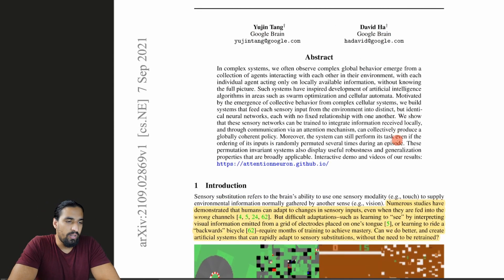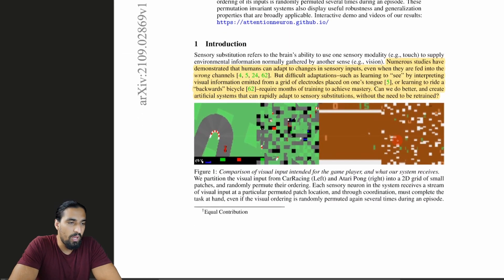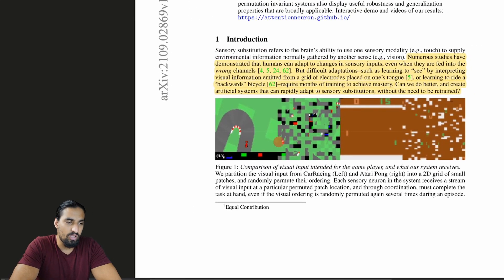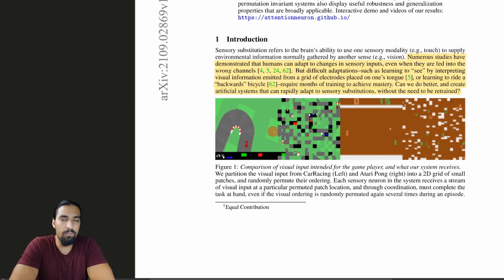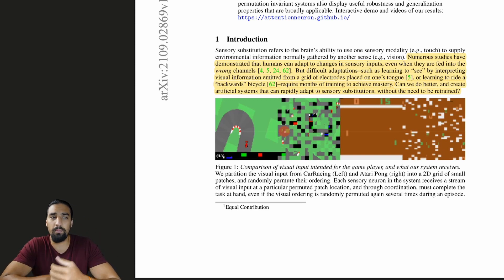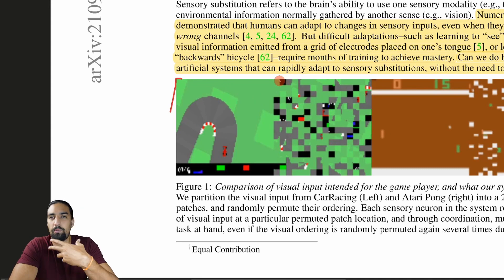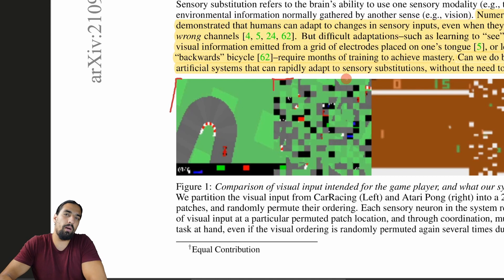The idea is to create an agent, or a framework, that will be able to solve a problem like this one. You have an RL-like environment, like this car racing game, and the goal is to be able to play the game even though the observation was severely shuffled. A certain type of permutation is applied to the input observation. This is the original car racing game. You divide this observation into patches, like a grid of patches, then you do an arbitrary permutation, and you still want to preserve the performance the agent had previously.